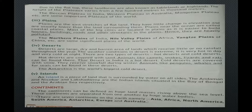Plains are the vast stretches of flat land. They have little change in elevation and are usually lower than the land surrounding them. Plains near the ocean are called coastal plains. Most of the big cities are located in plains as it is easier to build houses, buildings, roads and other structures there. Hence, they are heavily populated. The Northern Plains of India, Nile Valley Plains of Africa, Yangtze Plains of China, etc. are some significant plains of the world.